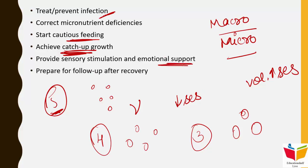The eighth principle is to provide sensory stimulation and emotional support — children are irritable and need love and emotional care. The ninth principle is to prepare for follow-up after recovery — bringing the child back after a month to verify that dietary intake is being maintained properly. These are the 10 principles important for Kwashiorkor treatment.